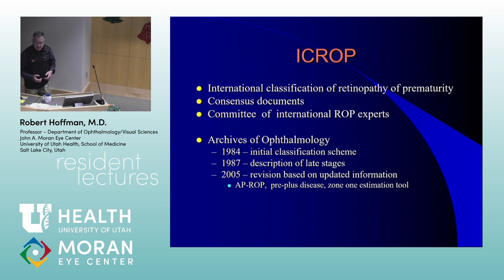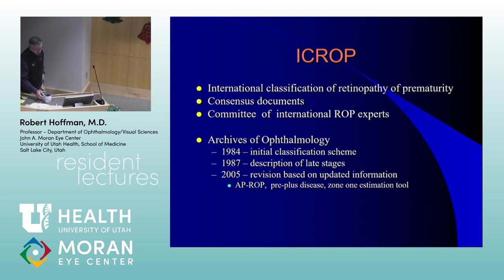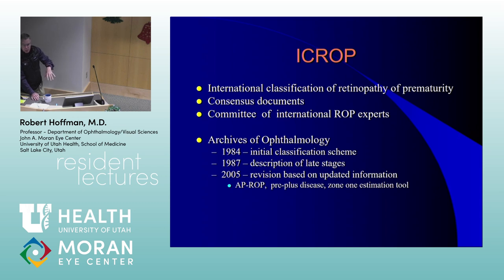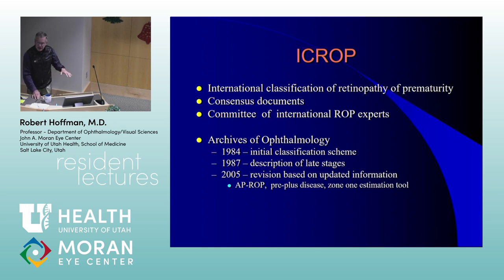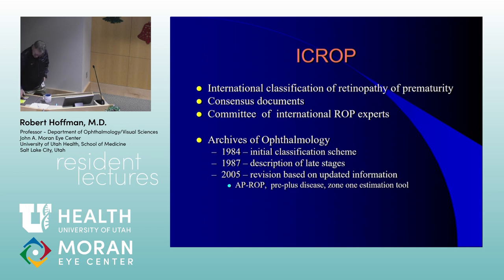ICROP was arrived at by a group sitting in a room deciding how to describe ROP. There are three iterations: in 1984, the initial classification of stages, zones, and plus disease; in 1987, a description of the late stages — the various stages of retinal detachment, 4A, 4B, 5, open, closed funnel; and in 2005, a revision that updated and added the concept of aggressive posterior ROP — ROP in zone 1 and posterior zone 2 that behaves differently, is very active, and leads to disaster if not dealt with quickly.